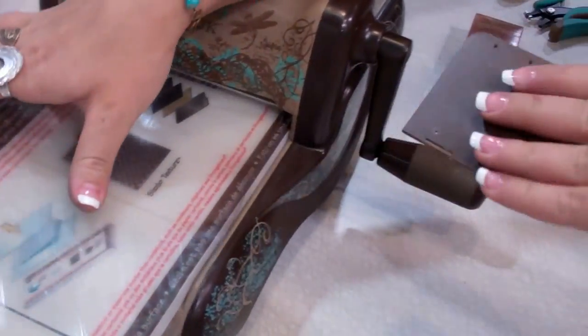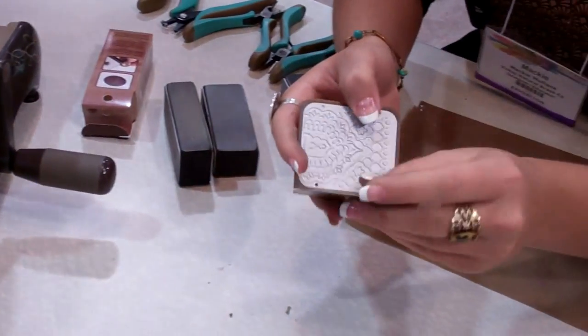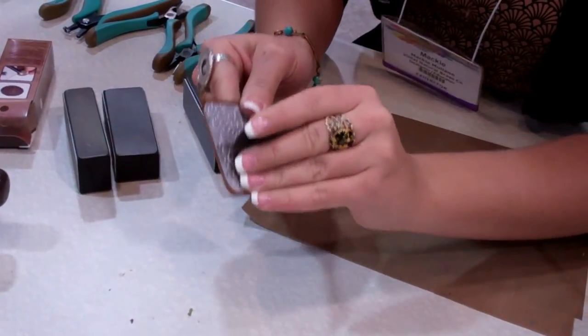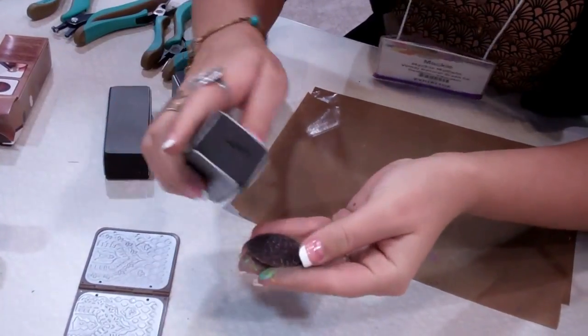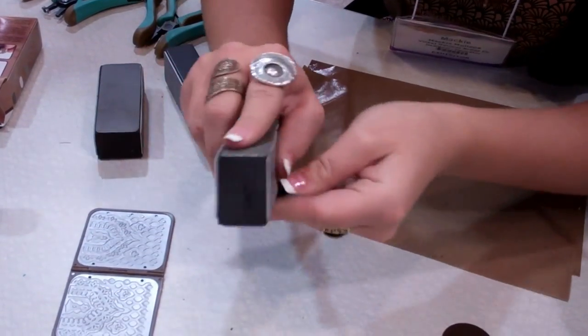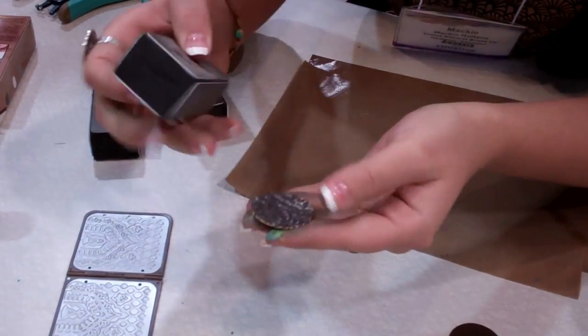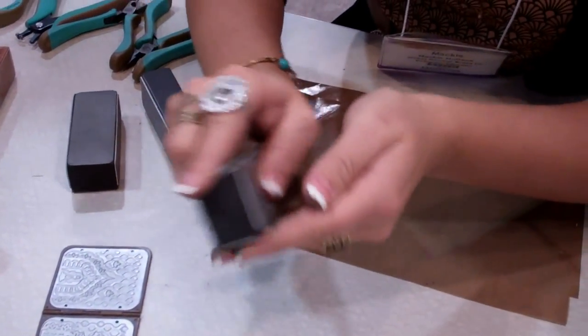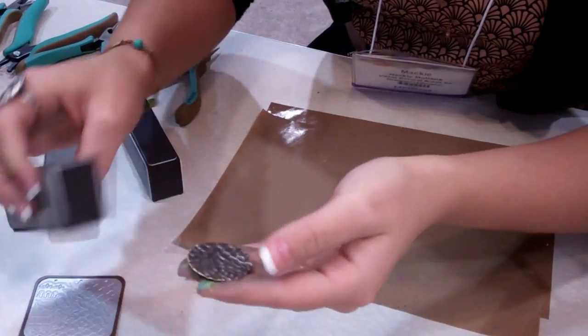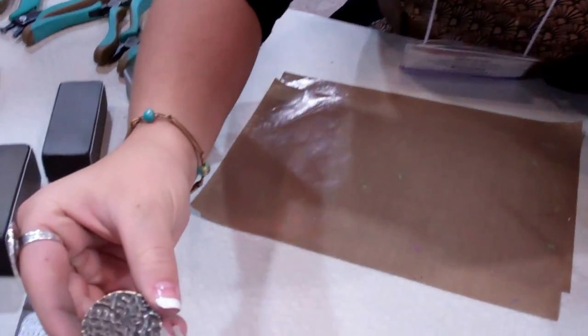Once I take that out, the design is embossed onto the blank. Let me highlight those raised areas so you can see the design.